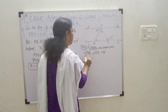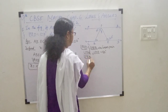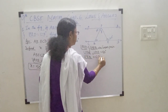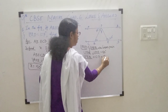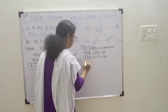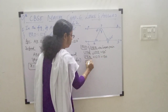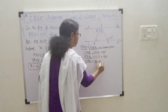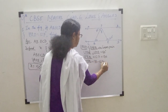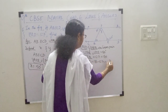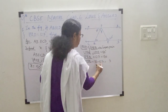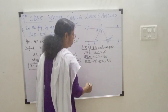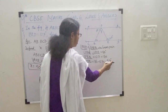So, angle PRQ is therefore 180 minus 127, which gives 53 degrees.